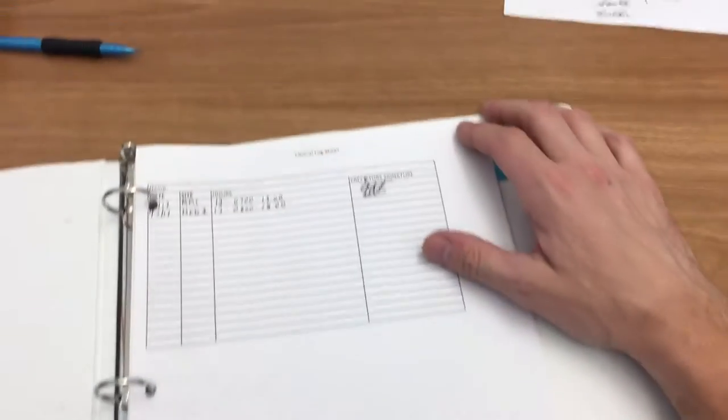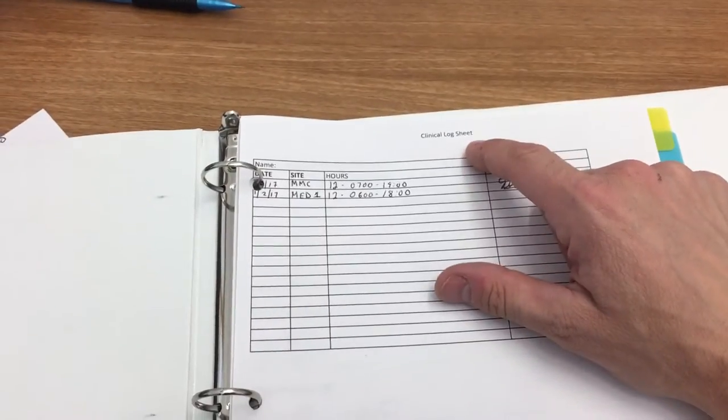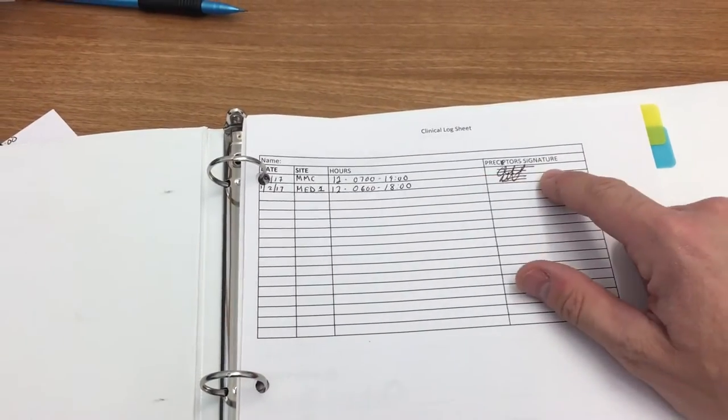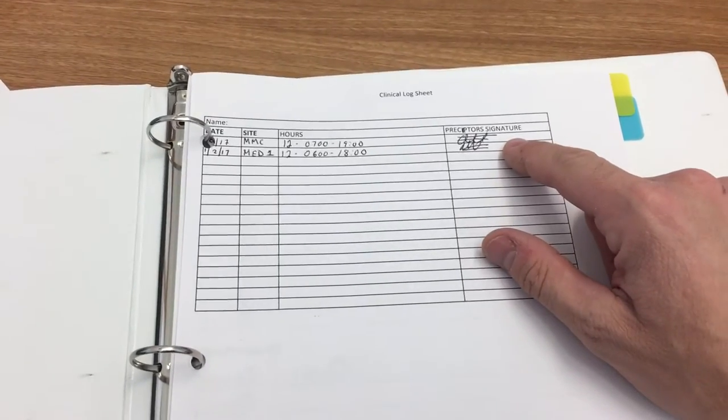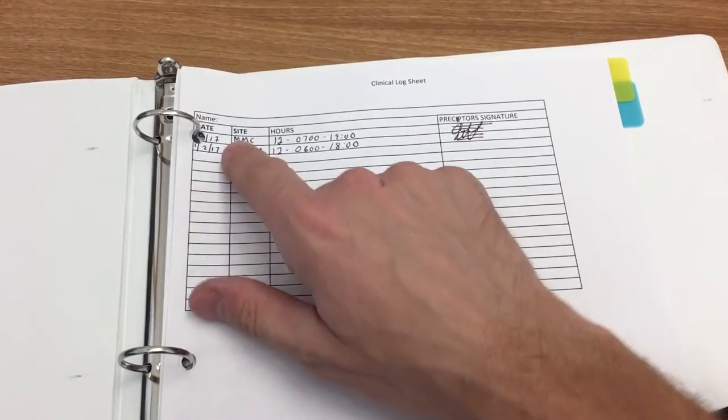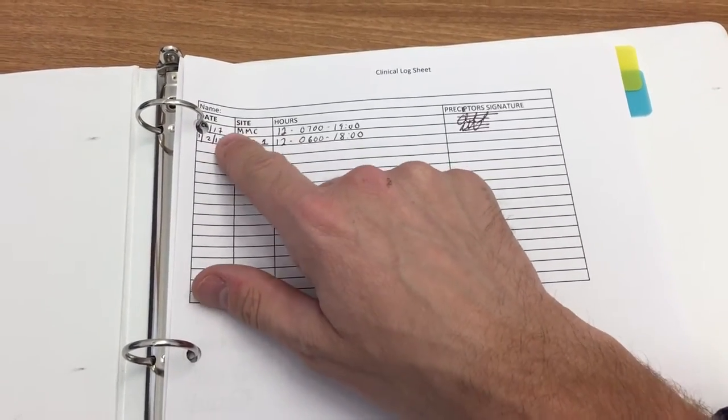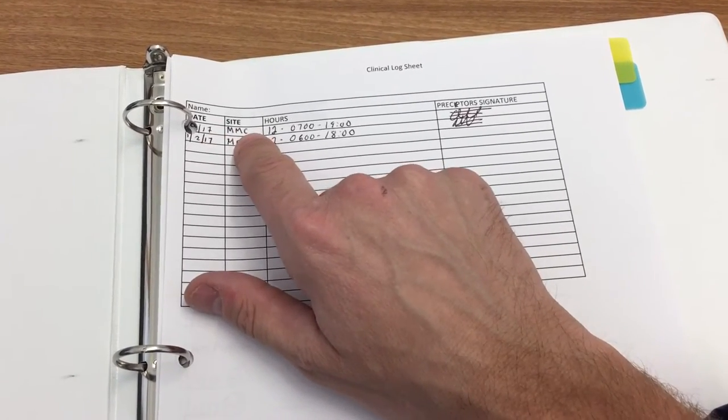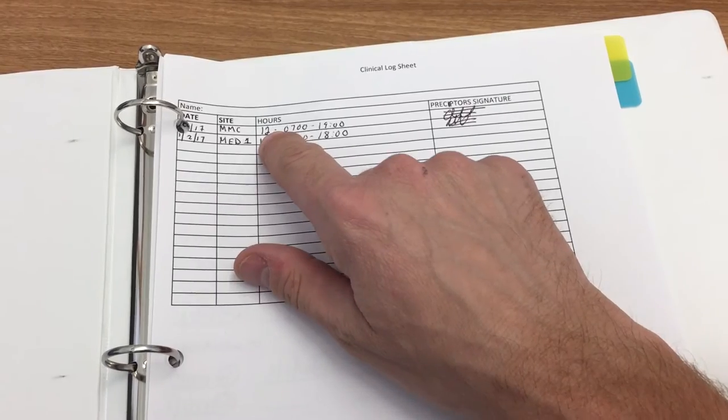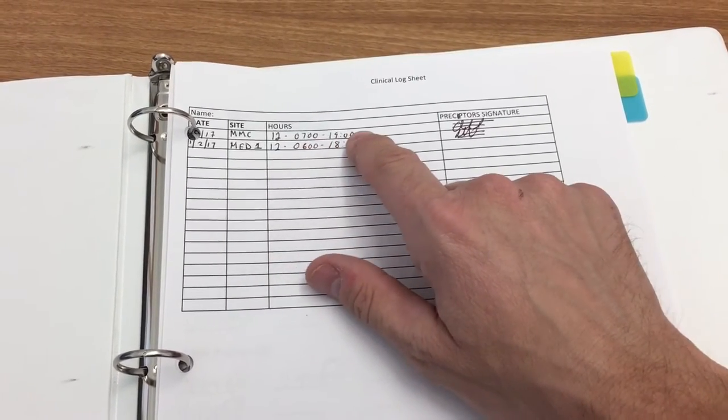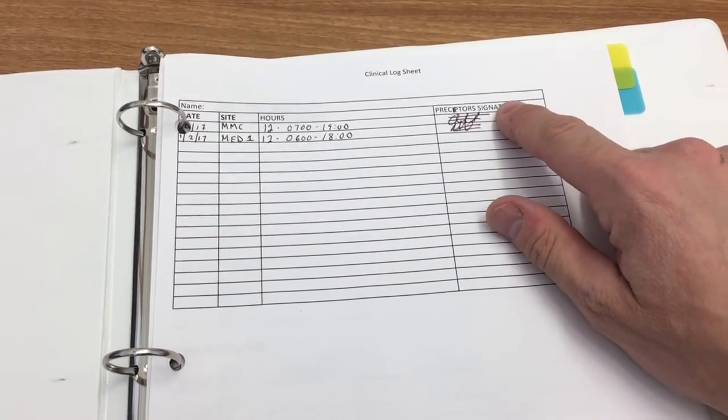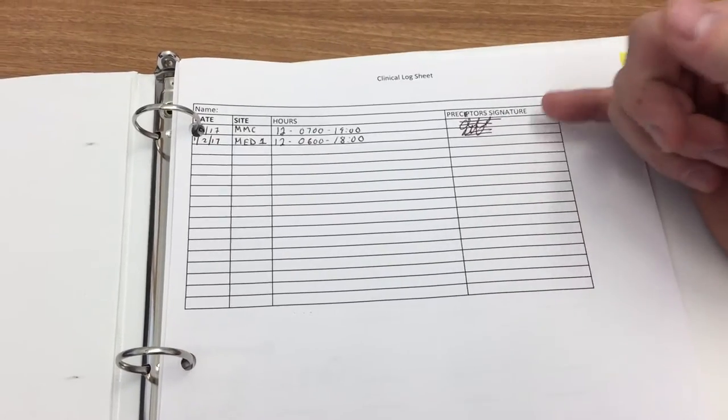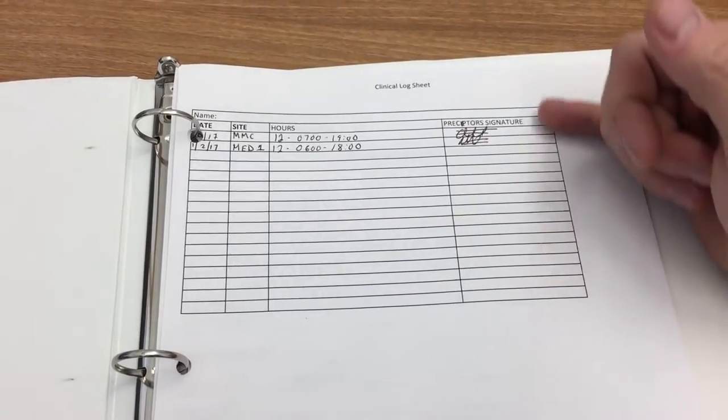So the very first page is going to be your clinical log sheet, and you're going to log every one of your clinical experiences in here. So, for example, you've got the date. This here is 1-1-2017 at Memorial Medical Center. It's a 12-hour shift, and it went from 0700 to 1900, and then you need to have your preceptor sign that.